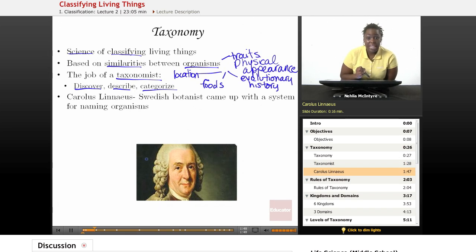There was a scientist named Carolus Linnaeus, and he was a Swedish botanist, and he was the first scientist to come up with a very organized system of classifying and naming organisms.